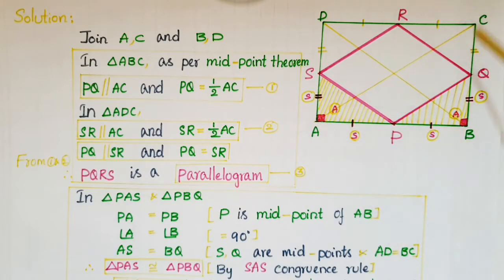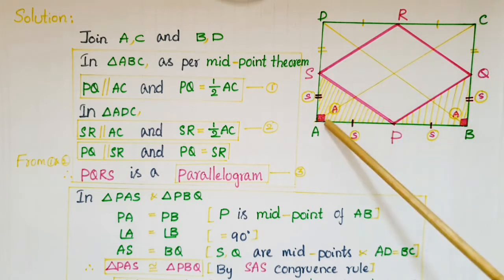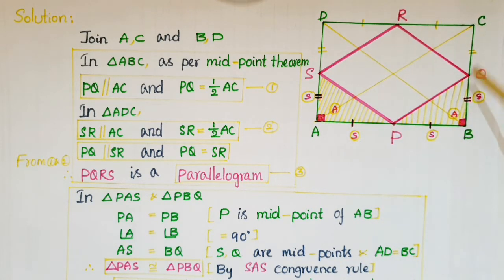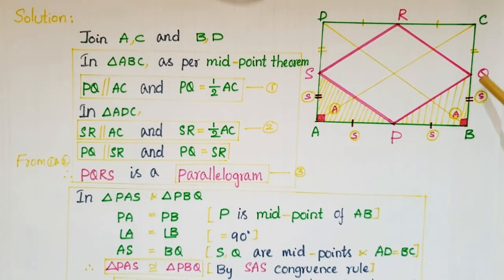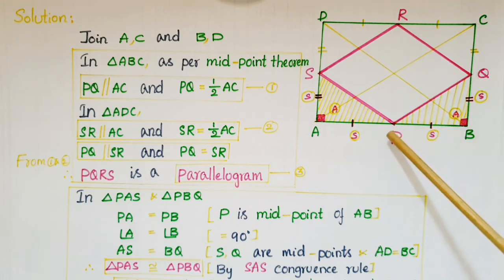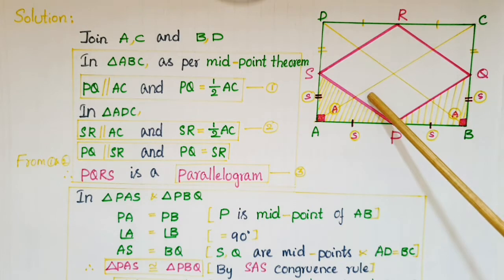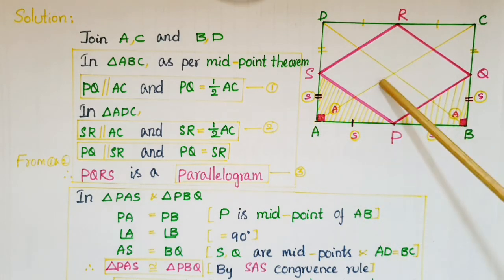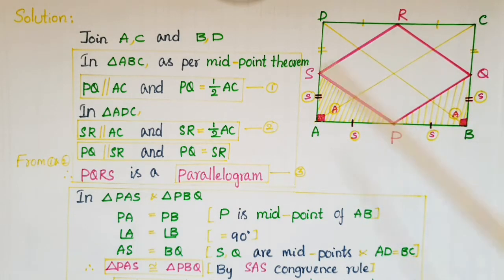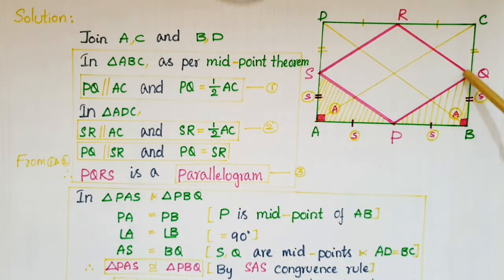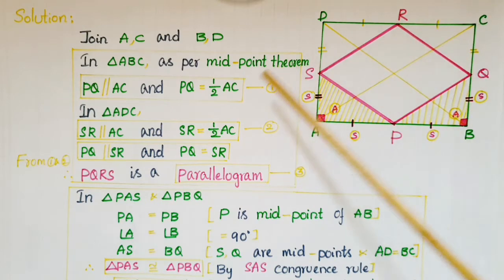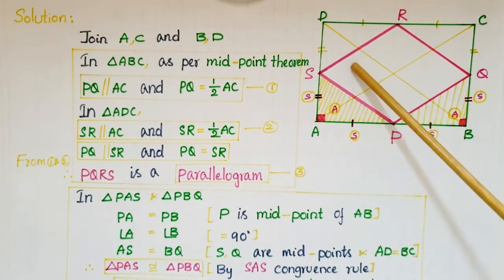Now join AC and BD — then you will get a triangle here. In triangle ABC, P and Q are midpoints, so we can apply the midpoint theorem. As per the midpoint theorem, the line segment joining the midpoints of two sides of a triangle is parallel to the third side and equal to half of it. So PQ is parallel to AC and PQ is equal to half of AC. This is the first equation.